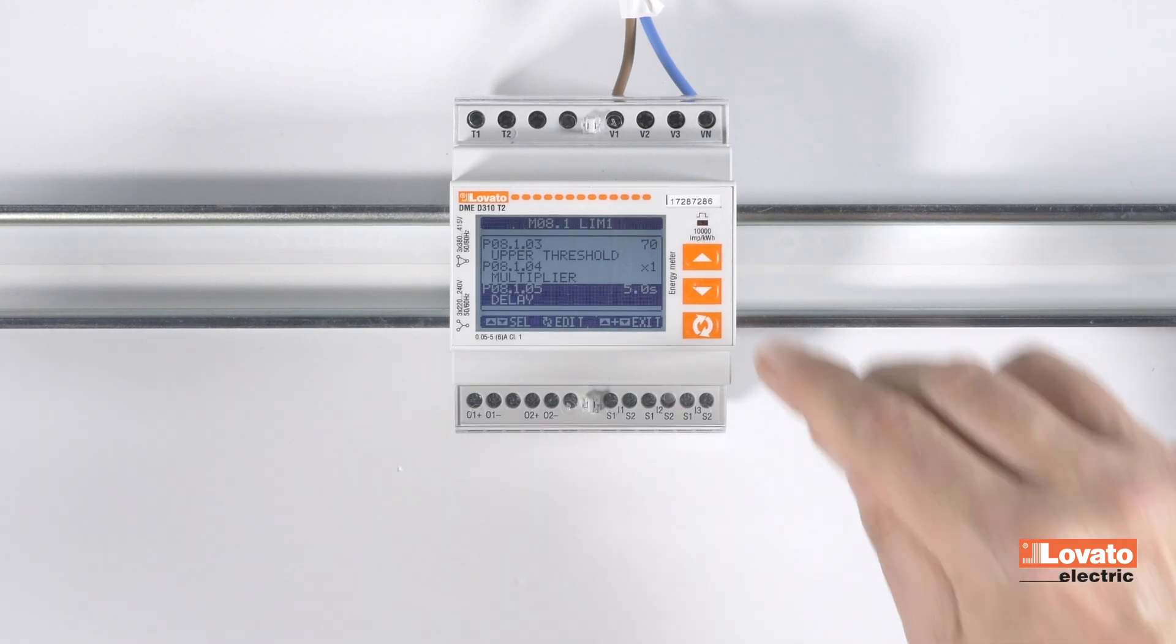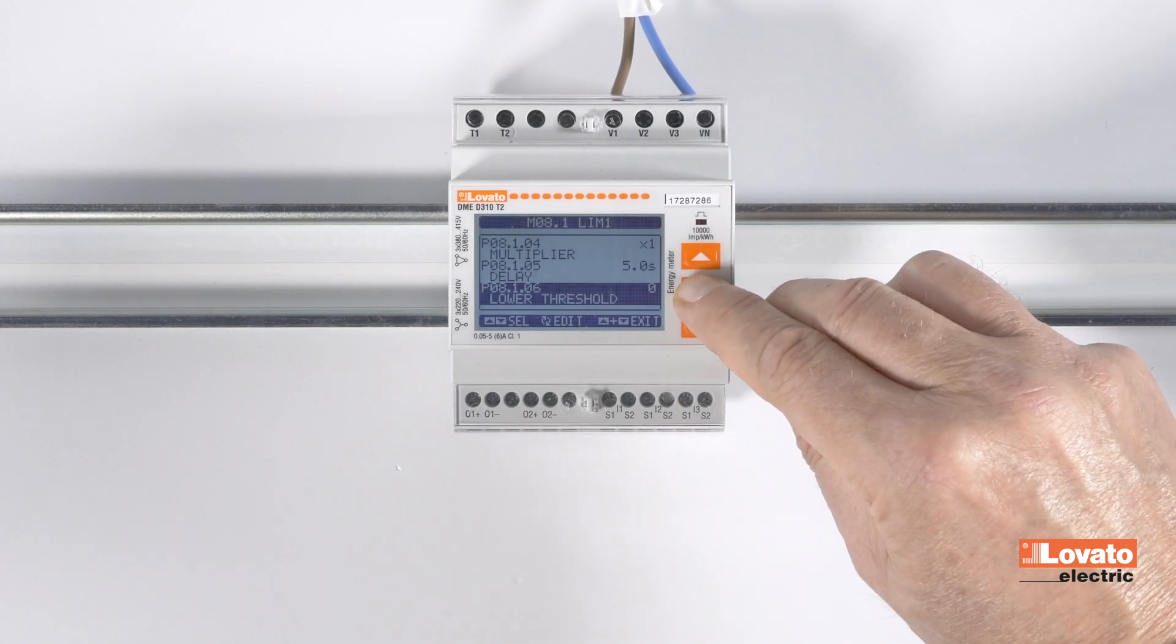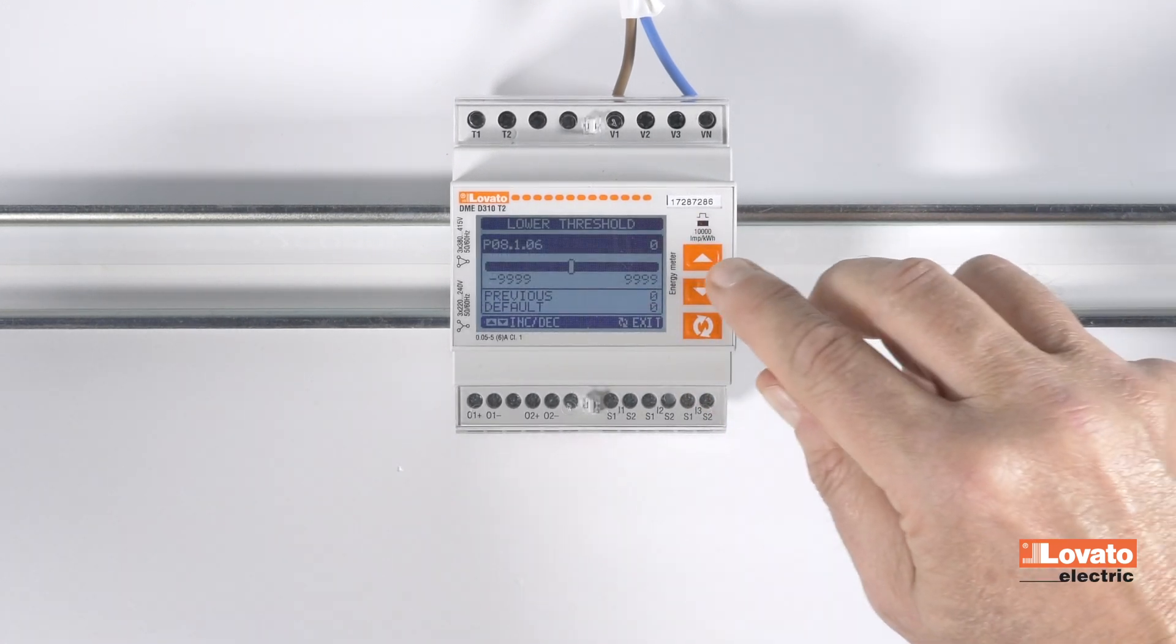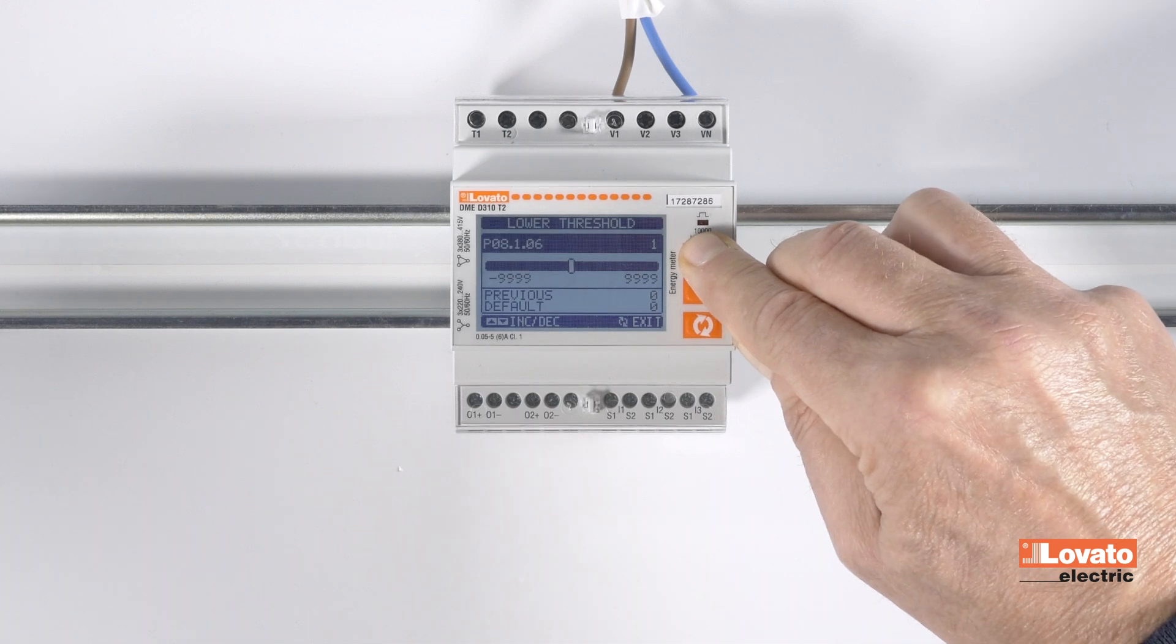Now, we'll set the reentry threshold. Select the item Lower Threshold and enter the value, 50 amps for this example, and confirm.